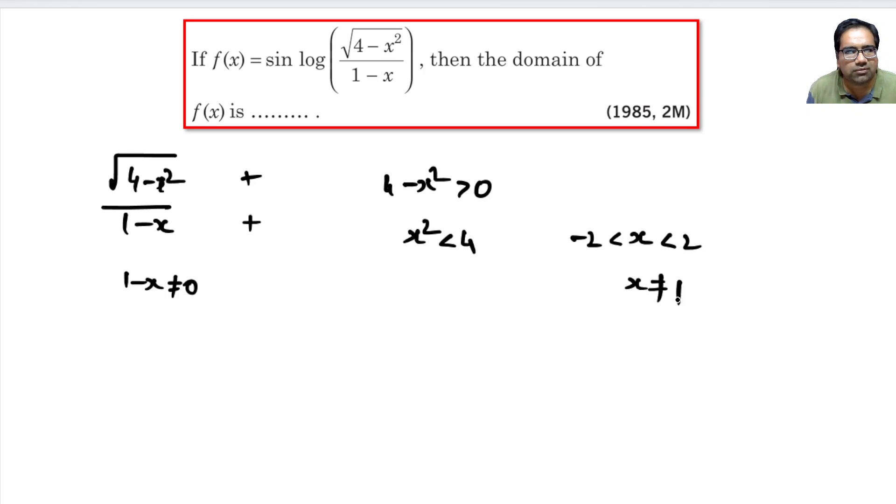That is another story. At the same time, 1-x should be greater than 0. What does that mean? x should be less than 1. So we have these three conditions all put together. What does that mean? -2 < x < 1.